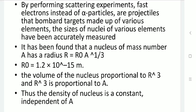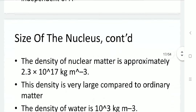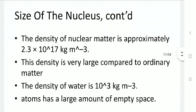The volume of the nucleus is proportional to R³, and since R³ is proportional to A, the density of the nucleus is constant — that is, independent of A, the atomic mass number. The density of nuclear matter equals 2.3 × 10¹⁷ kg/m³. This density is very large compared to ordinary matter; for comparison, the density of water is only 10³ kg/m³, which means the atom has a large amount of empty space.